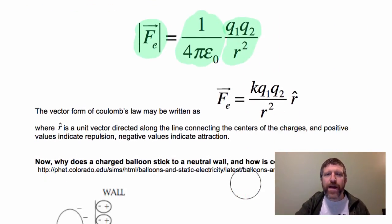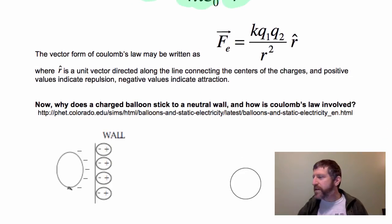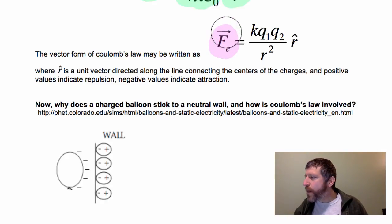Now, the vector form of this, it's really the same thing, but we want to, this is a vector, so we want to emphasize that. If you want to express this as a vector, then we need a directional component added on there. So same magnitude, but we express the direction as R hat.